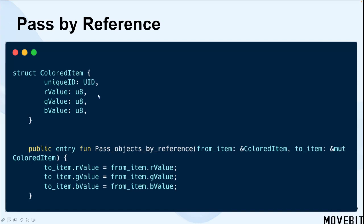All of the type are uint8 bit integer. The code also contains a public entry function named passObjectsByReference. This function takes two parameters: a reference to the color item object that you want to copy from, and the to item, a mutable reference to the color item that you want to copy the values into.